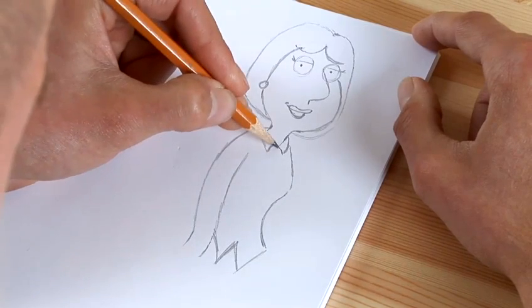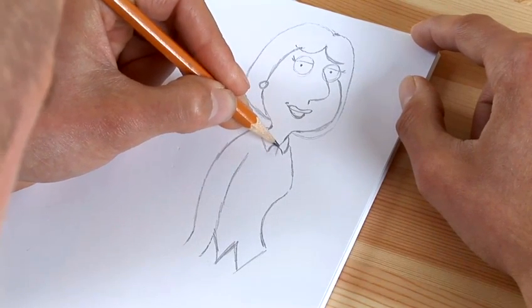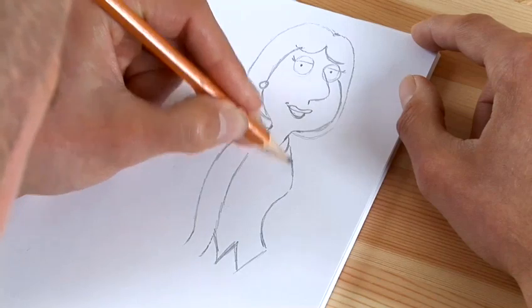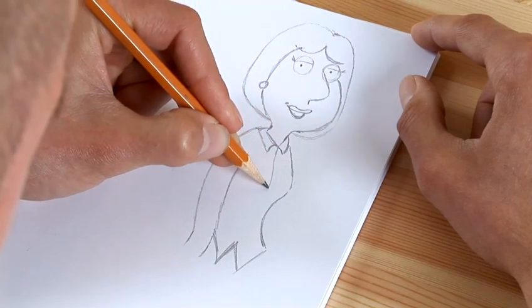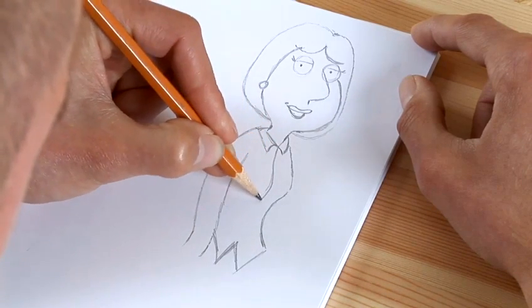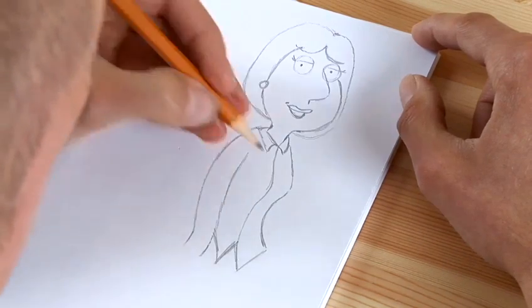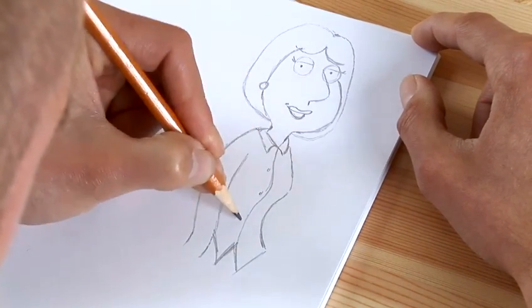Now, if you want to do the middle of the shirt with the buttons, you basically just follow this line down, like that, and join it onto the bottom, just doing a few circles for the buttons.